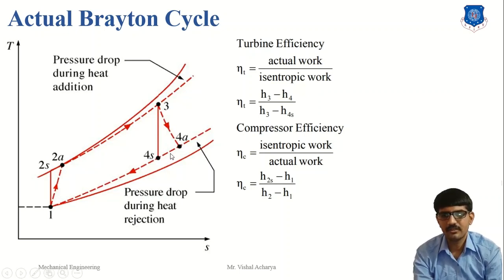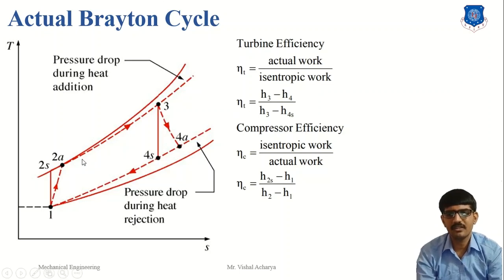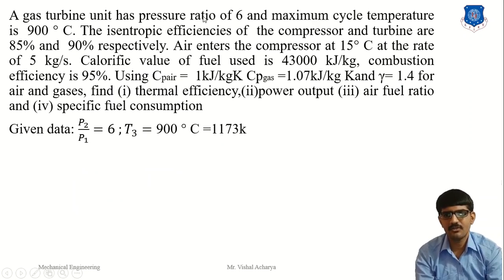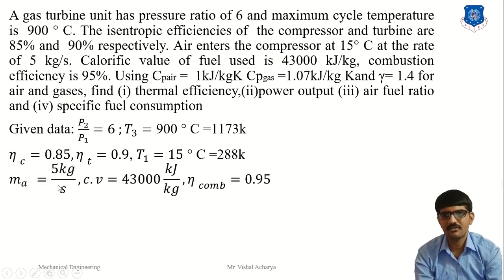For practice, derive the efficiency of the actual Brayton cycle and also derive the equation for maximum work at the optimum pressure ratio of the actual Brayton cycle. Next, we discuss a numerical problem related to a gas turbine. A gas turbine unit has a pressure ratio of 6 and a maximum cycle temperature of 900°C, which is 1173 Kelvin. The isentropic efficiency of the compressor is 85% and of the turbine is 90%. Air enters the compressor at 15°C, meaning T1 = 288 K, at a mass flow rate of 5 kg/s.